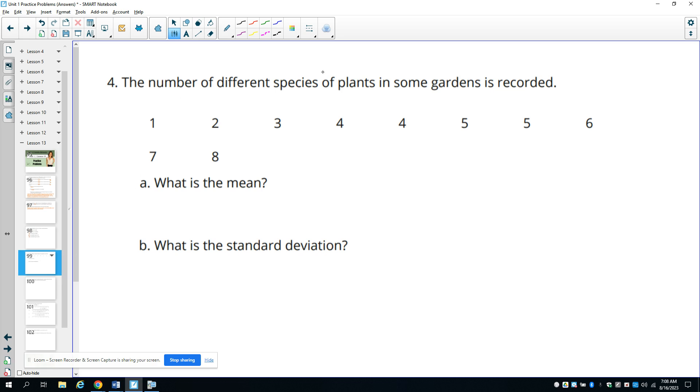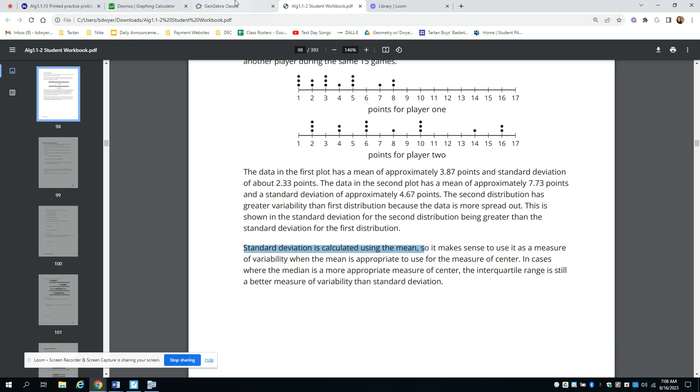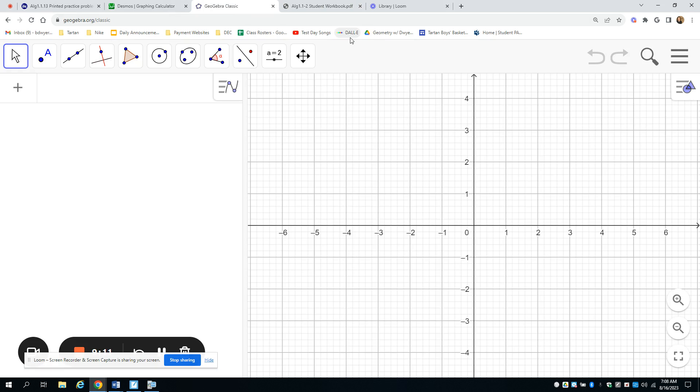Number four, the number of different species of plants in a garden is recorded. We're looking for the mean and the standard deviation. So the mean is pretty easy. We'll just add up all these numbers and divide by 10. So the total of these is 45. There are 10 numbers. So the mean is 4.5. The standard deviation, we're going to want some technology for this. So I'll show you again on GeoGebra how to do this. I'm also going to show you on a graphing calculator.